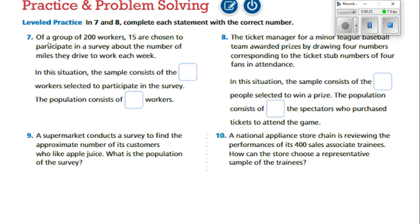Number seven. Of a group of 200 workers, 15 are chosen to participate in a survey about the number of miles they drive to work each week. In this situation, the sample consists of what? Well, remember the group of 200 workers is our population — that's the total amount we're talking about getting this survey done by. But 15 are chosen; that's the sample from that population. So the sample consists of 15 workers selected to participate in the survey.